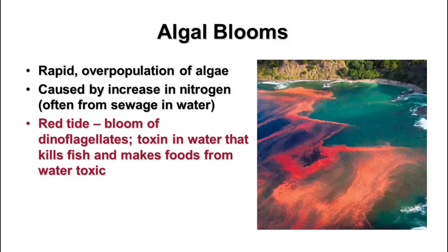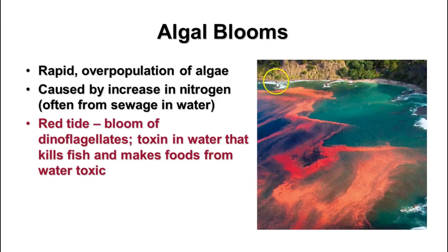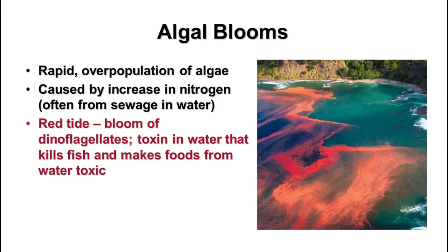A red tide is a special kind of bloom—a bloom of dinoflagellates. The dinoflagellates give off a toxin in the water that can kill fish and make seafood toxic. They can also be harmful to you if you're in the water. In a fishing village, a red tide can devastate income, and even fish that wash ashore can't be eaten or sold because they're harmful.